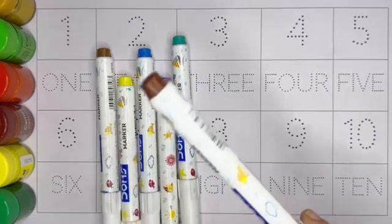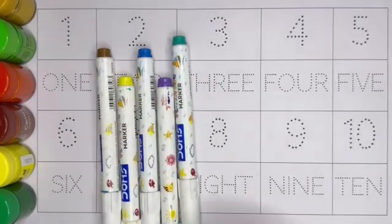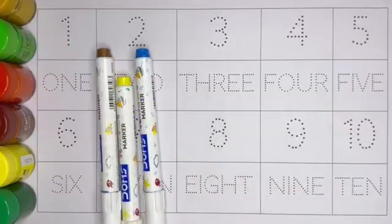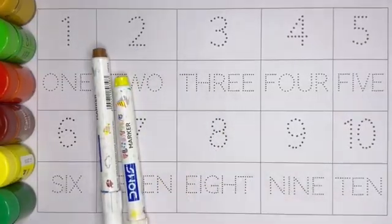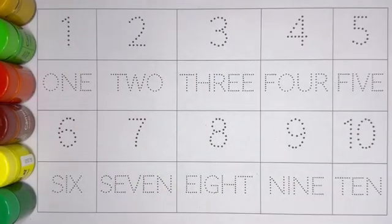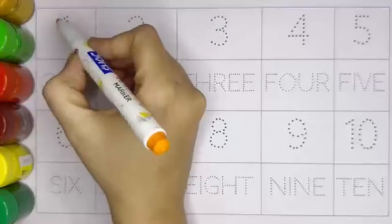black color, dark brown color, dark green color, violet color, sky blue color, yellow color, brown color. Kids, now let's trace the numbers.